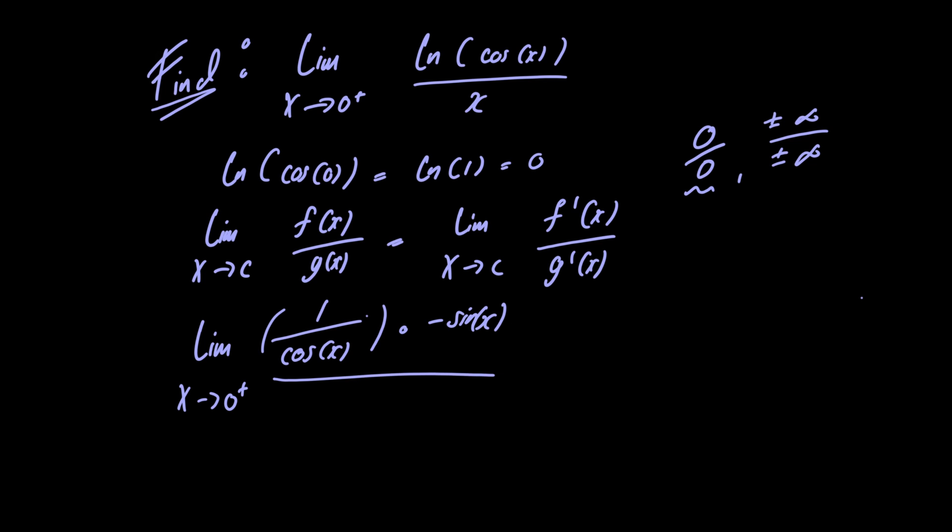Now we can simplify this expression. Doing so we have the limit as x approaches 0 from the right of minus tangent of x, because minus sine of x divided by cosine of x is just equal to minus tangent of x.